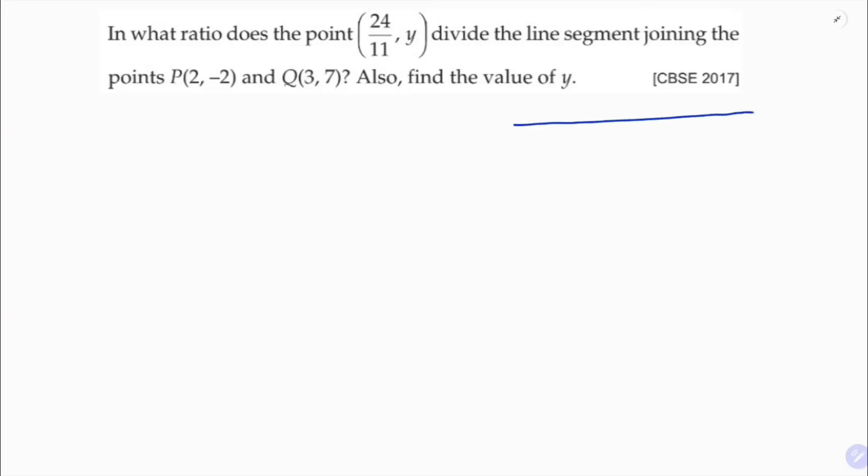So here, P and Q: P is like 2 comma minus 2 and Q is 3 comma 7. This is a point I can take A, which divides 24 by 11 comma y. It divides in the ratio m1 is to m2. So I need to find m1 is to m2.